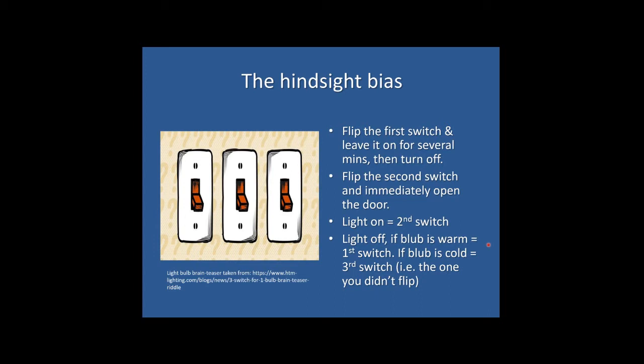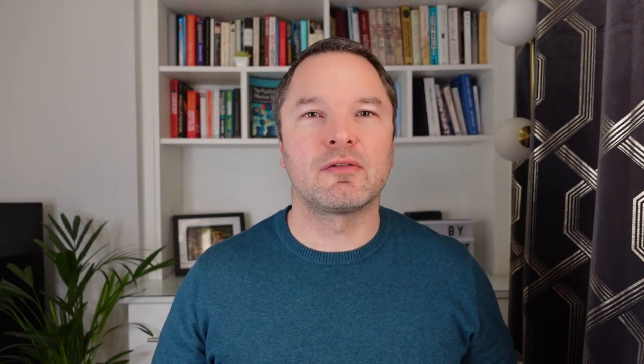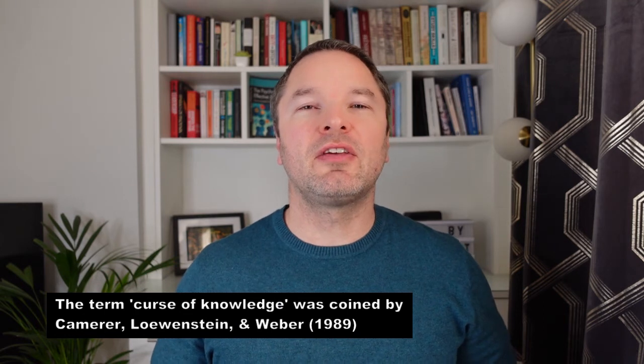And that's the hindsight bias in action. Once we know something we cannot unknow it, and it becomes much more difficult for us to reflect on what it's like to be ignorant of the knowledge we now take for granted. One of the consequences of finding it difficult to reflect back on a time where you didn't know something that you now take for granted is that inability to assume that perspective of ignorance also makes it difficult to understand and appreciate what it's like for someone who's yet to benefit from the learning that you've undertaken.